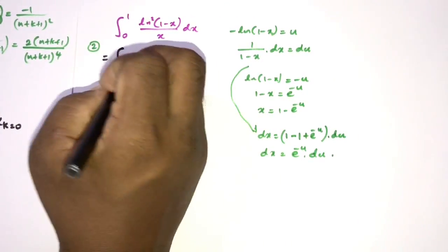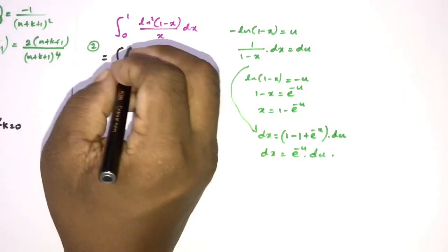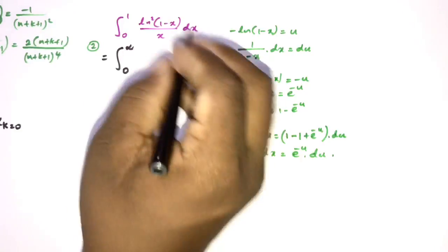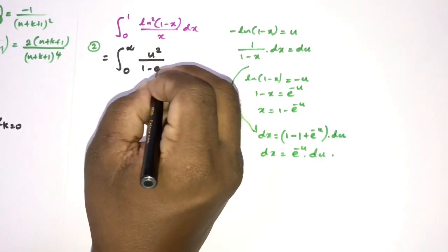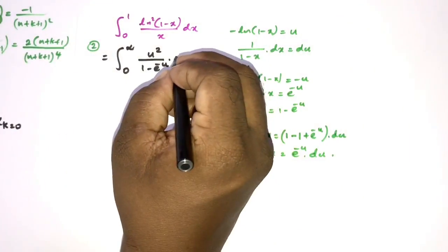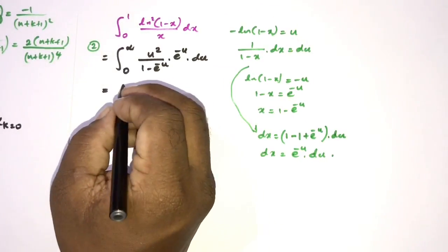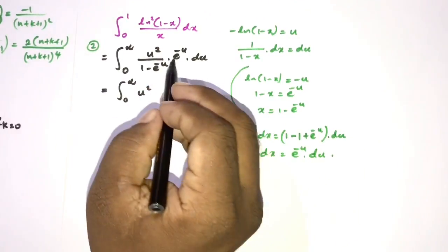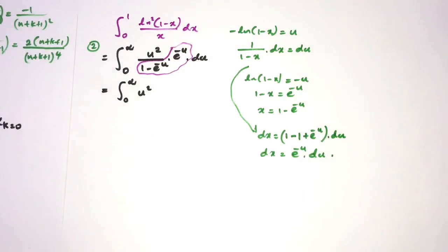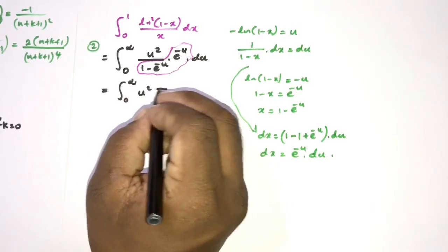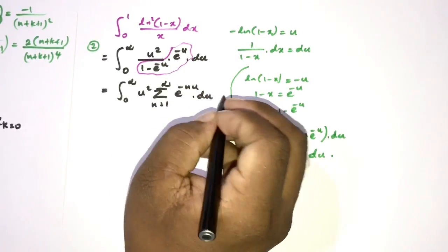After substitution, the integral becomes ∫₀^∞ u² · e^(-u)/(1-e^(-u)) du. We can represent e^(-u)/(1-e^(-u)) as a series: Σ(n=1 to ∞) e^(-nu). So the integral becomes ∫₀^∞ u² · Σ(n=1 to ∞) e^(-nu) du.